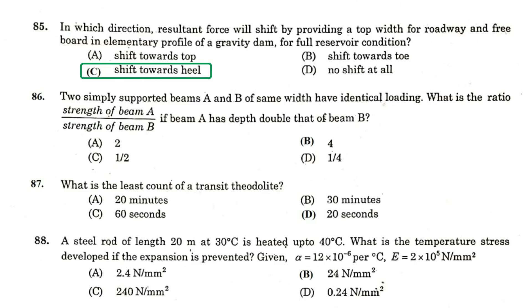Two simply supported beam A and B of same width have identical loading. What is the ratio of strength of beam A divided by strength of beam B if beam A has a depth double that of beam B? Answer is 4. What is the least count of a transit theodolite? 20 seconds.